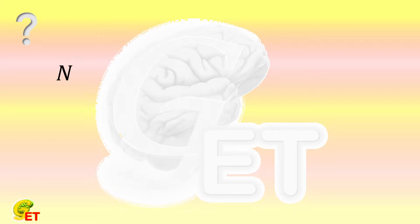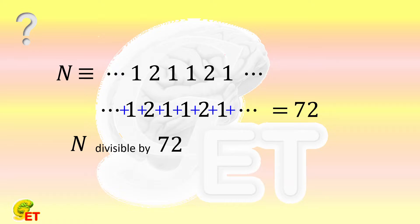There is a natural number n. All of its digits are either 1 or 2. The digit sum of this number, which means the summation of all of its digits, is 72. In addition, n itself is divisible by 72.